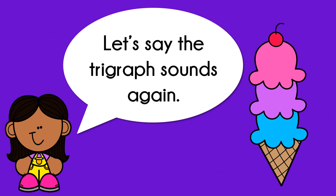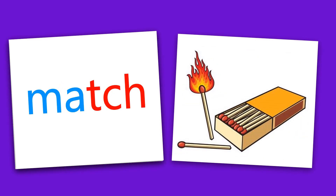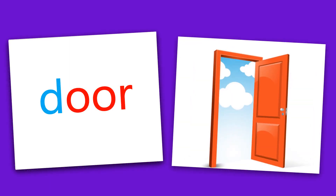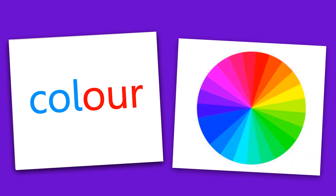Let's say the tri-graph sounds again. Listen and repeat after me. Tch, tch as in match. Oor, oor as in door. Gue, gue as in fatigue. Our, our as in colour.